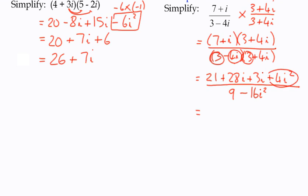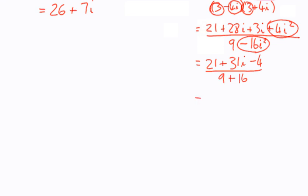In my numerator, I've got plus 4i squared. So that's going to give me 21 plus 31i minus 4 divided by 9 plus 16. So in both these cases, I'm substituting i squared for negative 1. And then what we've got here on the top, we've got 17 plus 31i divided by 25, which gives us the answer 17 over 25 plus 31 over 25i.